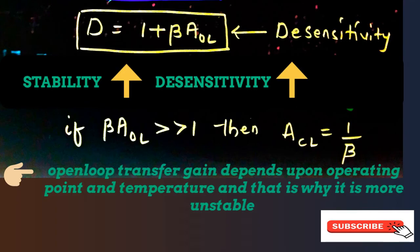The stability of the feedback amplifier increases whenever its desensitivity increases, meaning sensitivity towards any change in operating point or temperature is reduced. The sensitivity of the feedback amplifier is less compared to an amplifier without feedback. If β·AOL is made much greater than 1, the closed-loop gain of the feedback amplifier becomes independent of the open-loop gain, which means the amplifier is stabilized.